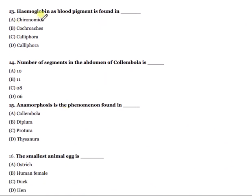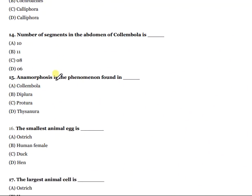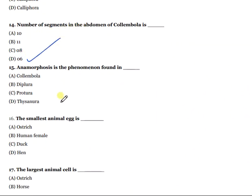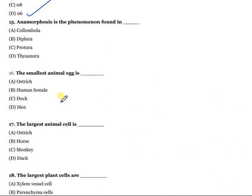Question 13: Hemoglobin as a blood pigment is found in which of the following? The right answer is Chironomids. Question 14: The number of segments in the abdomen of Collembola is how many? The right answer is six.